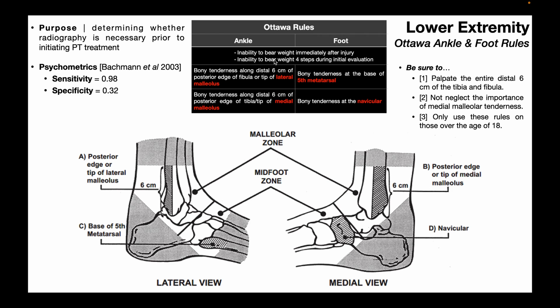The first two criteria are shared by both the ankle and foot rules. Number one: inability to bear weight immediately after the injury. Number two: inability to bear weight for four steps during the initial evaluation. Again, just one of these is sufficient — it would automatically necessitate radiography prior to initiating PT treatment. That applies to both the ankle rules and foot rules.